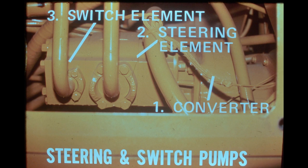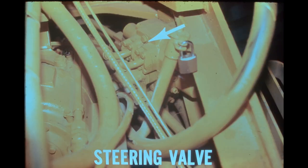From the steering pump and switch pump, hydraulic fluid is sent to the steering control valve. This valve is located inside the right side of the rear frame. It's mechanically actuated by the steering wheel through a steering gear assembly and drag linkage. Whenever the steering wheel is turned in either direction, the directional spool in the steering valve is moved, sending hydraulic fluid to the steering cylinders.